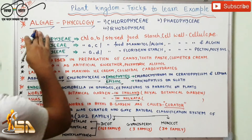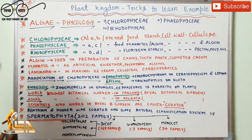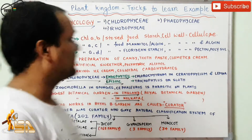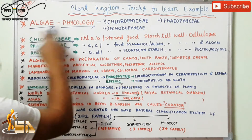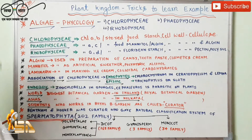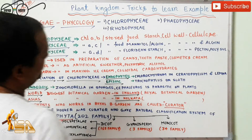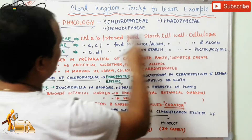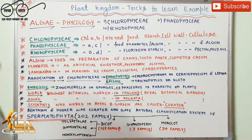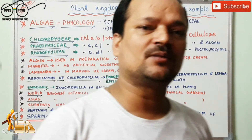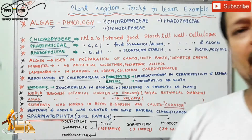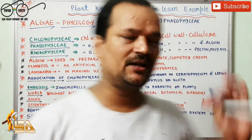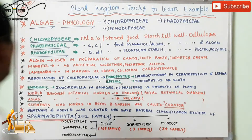Algae has been covered in previous videos that I have already explained. The study of algae is called phycology. Algae has been divided into three parts: chlorophyceae, phaeophyceae, and rhodophyceae. This classification is on the basis of their pigments as well as the components of their cell wall, which I have mentioned in this video.